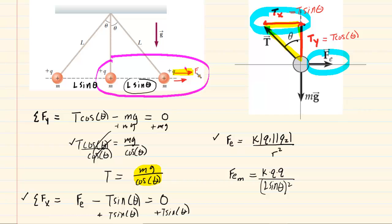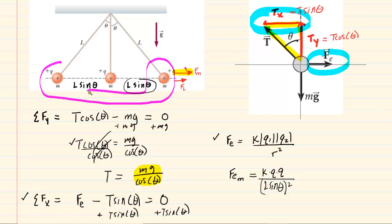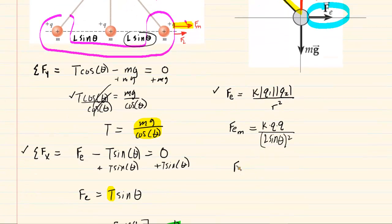The other electrostatic force, Fl, is exerted by the leftmost charge on the rightmost charge. Setting up an expression for Fl: it's K times Q times Q again — since both left and right charges have charge Q — but the total distance from the leftmost to the rightmost charge is L sine theta plus another L sine theta, which equals 2L sine theta. So the denominator is (2L sine theta) squared.